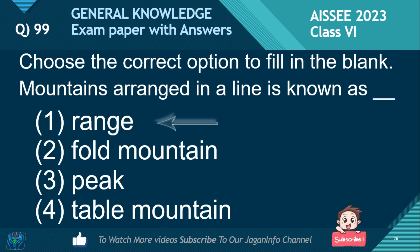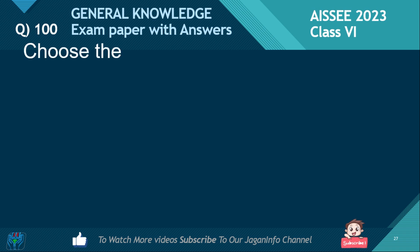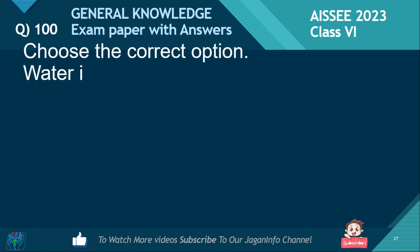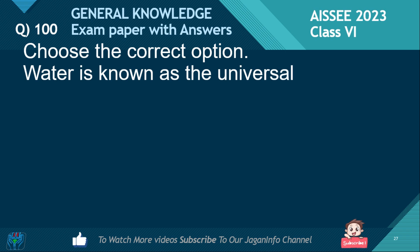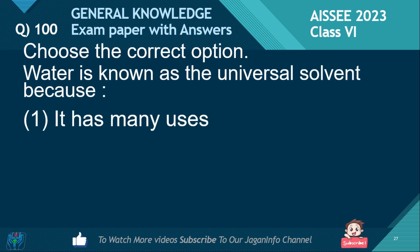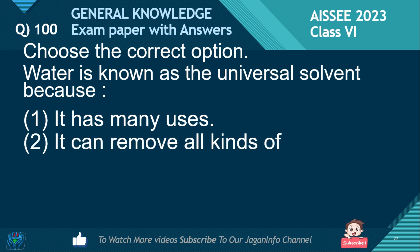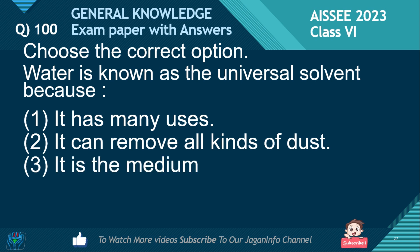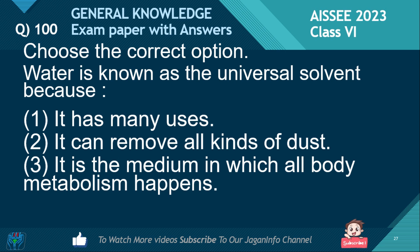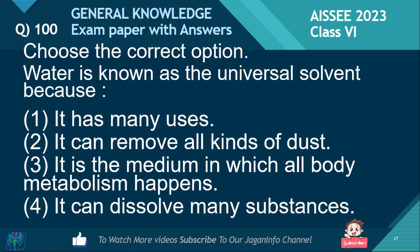The last question. Choose the correct option. Water is known as the universal solvent because: it has many uses; it can remove all kinds of dust; it is the medium in which all body metabolism happens; or it can dissolve many substances. The right answer is: it can dissolve many substances.